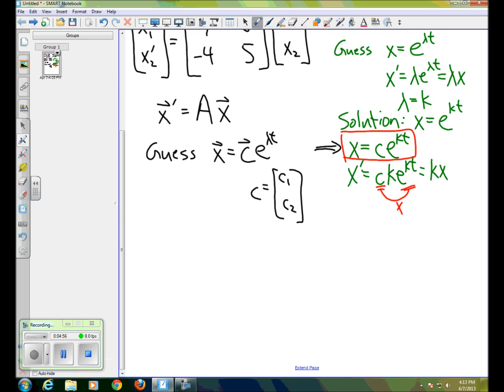Okay, so if this is x, then x prime would look like, now the vector c is just a constant, so that would be c times lambda e to the lambda t. And just for clarity, we're actually going to put the lambda in front of the constant. So we've got lambda times c, e to the lambda t. So that's x prime.